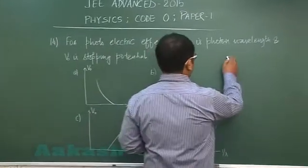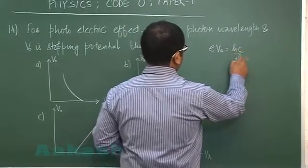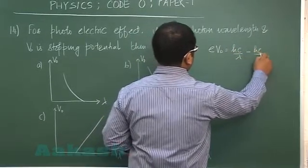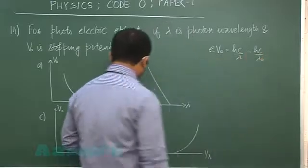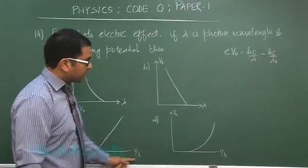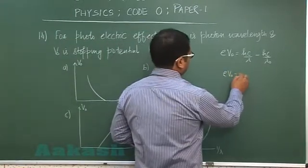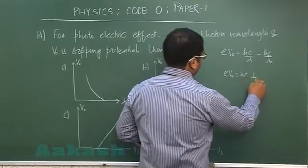The relation we know is eV0 is hc by lambda minus hc by lambda_naught. First, if we go with option number C and D, 1 by lambda is along the x-axis, so this would be eV0 is hc times 1/lambda minus hc by lambda_naught.